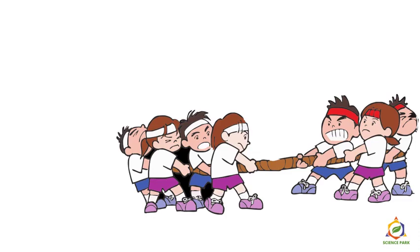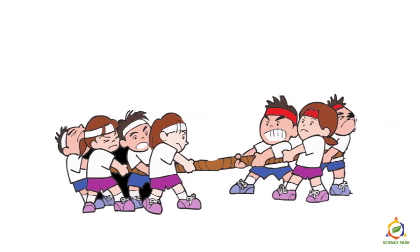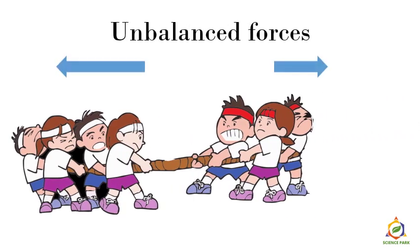Now in this case, there are three students on my right and four students on my left. So naturally, the group on my left will be able to pull the group on my right. So these are unbalanced forces — the forces are applied in opposite directions but they are not equal. The force applied by the group on the left is more than the force applied by the group on the right. That is why these are unbalanced forces.